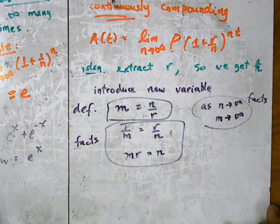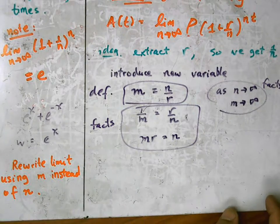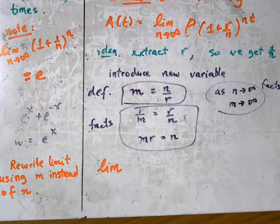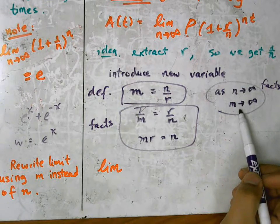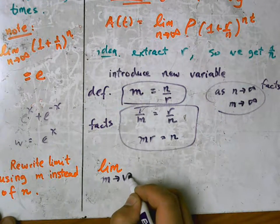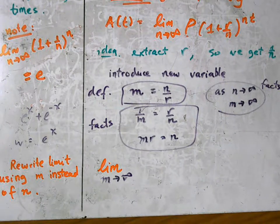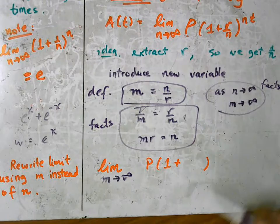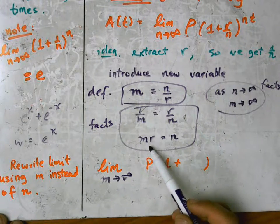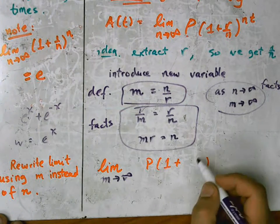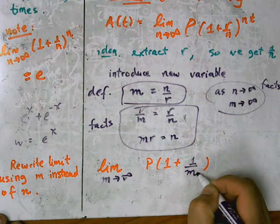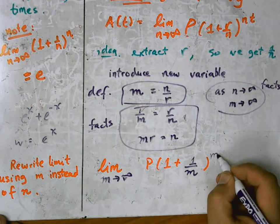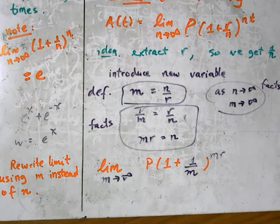So we can rewrite the limit using m instead of n. Take the limit that we got and just rewrite it. So now instead of the limit as n approaches infinity, but note that as n approaches infinity, m also approaches infinity. So we can rewrite the limit in that way. Of p of 1 plus, and here what we have is instead of r over n, we have 1 over m raised to the nt. But instead of n, we can say mr, and then the t is still there, of course.